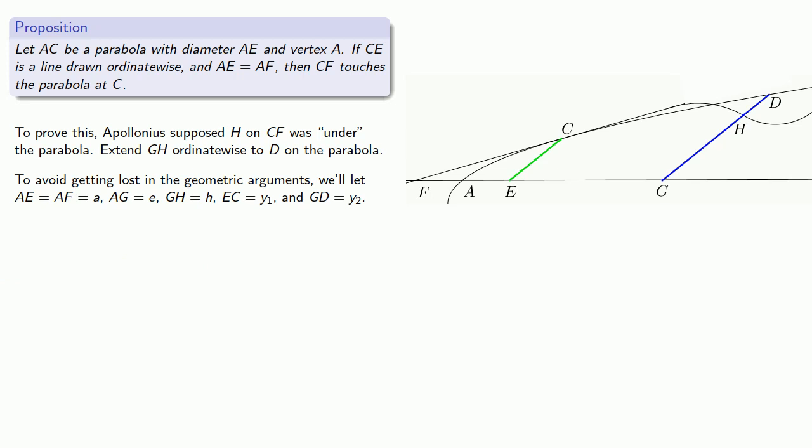Now because ACD is a parabola, the squares of the lines drawn ordinate-wise are to each other as the abscissae. So E is to A as Y2 squared is to Y1 squared.